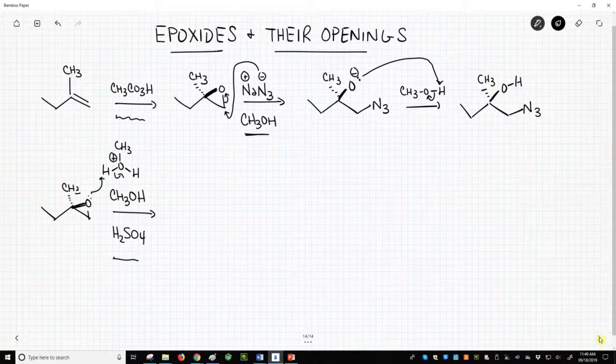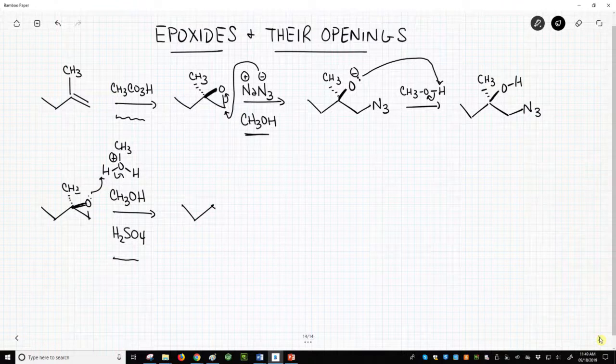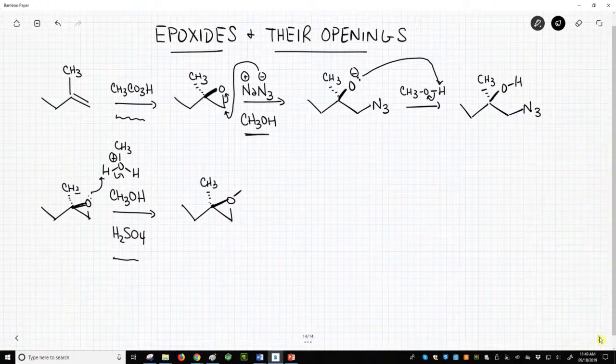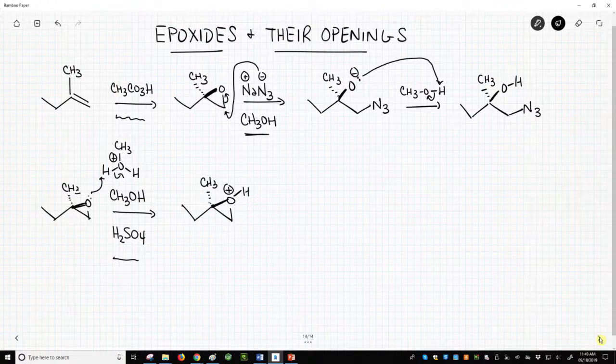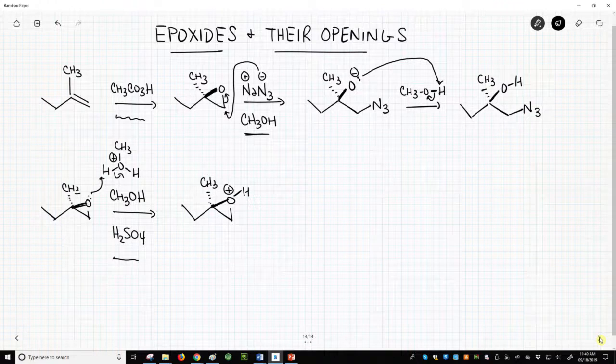So we first protonate the epoxide. Protonating the oxygen makes the ring much more electrophilic. A good thing, because our nucleophile, methanol, is very weak.